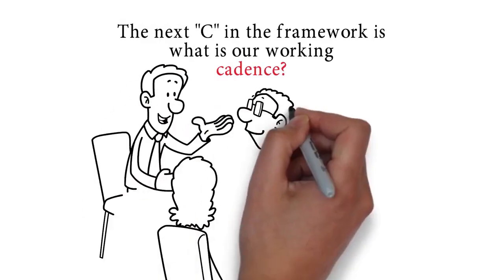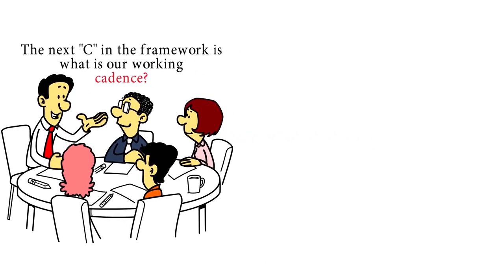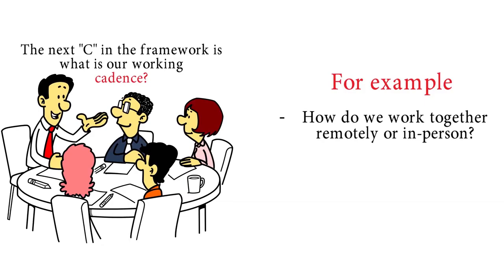The next C in the framework is what is our working cadence? If we're working on something, we must ensure we get the right people together at the right time. For example, how do we work together remotely or in person? When do we ensure things need to happen?